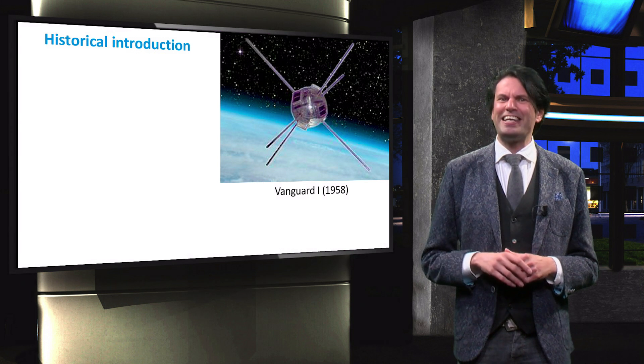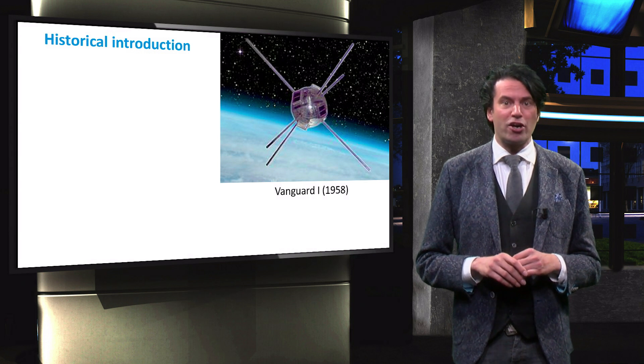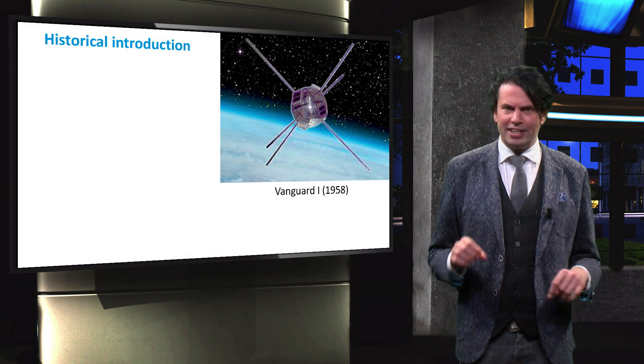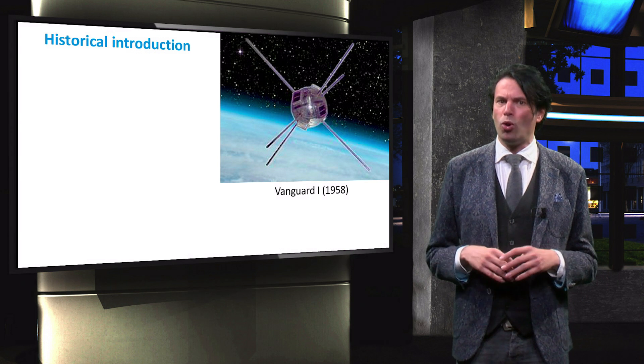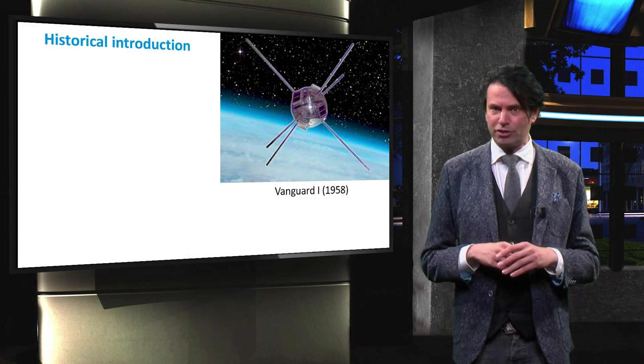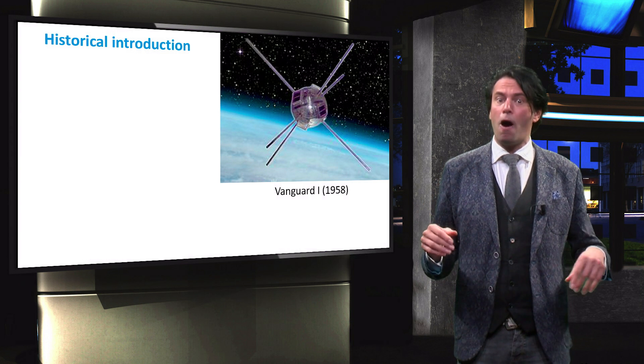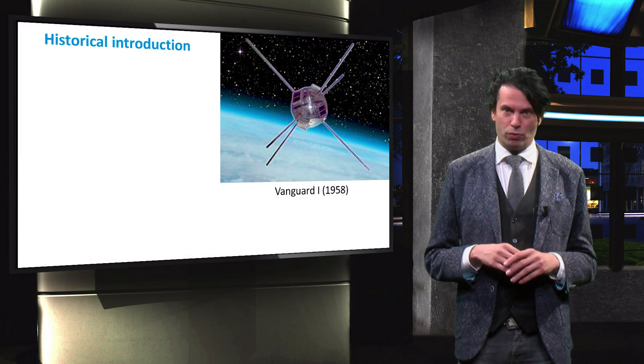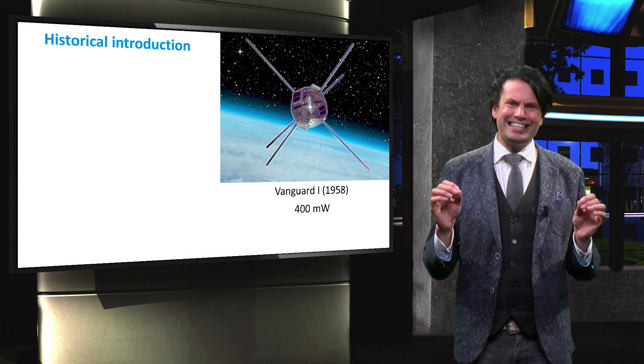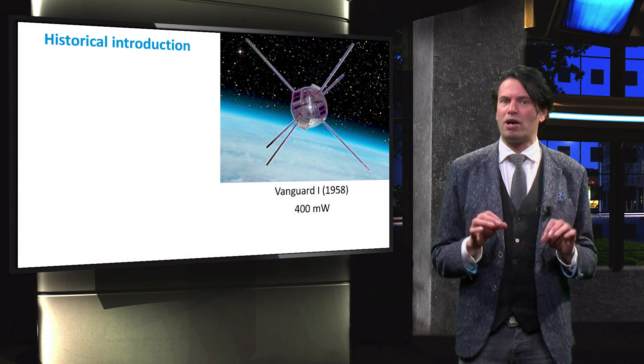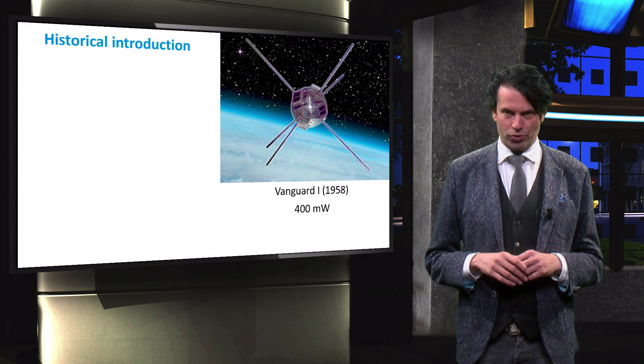In 1958 the first solar powered satellite, the Vanguard 1, was launched. This satellite had 8 small panels consisting of 6 series connected silicon-based solar cells. Each panel had an output power of around 50 milliwatts. During these years, space industry represented a safe niche market for innovative photovoltaic technologies.